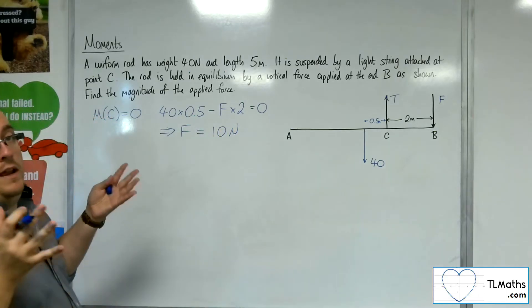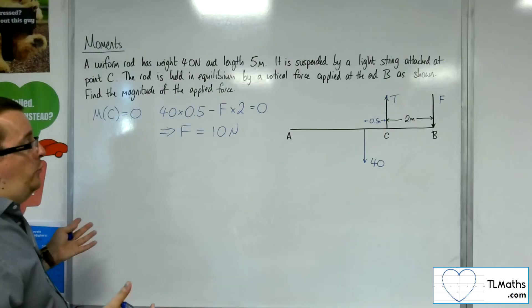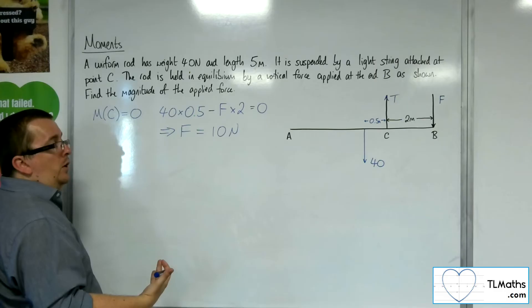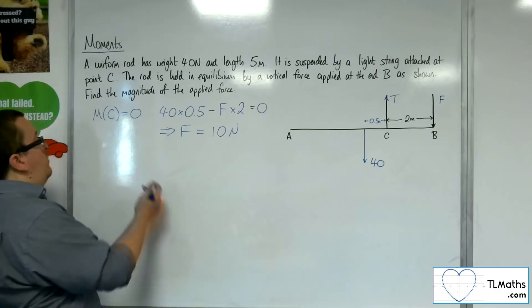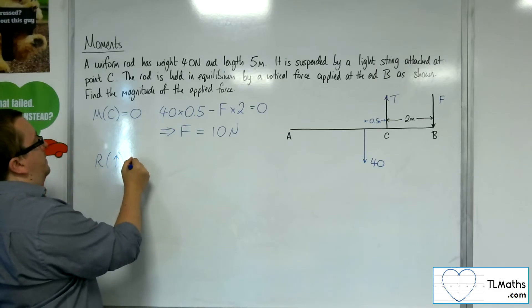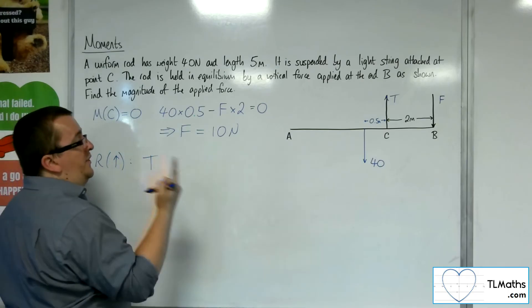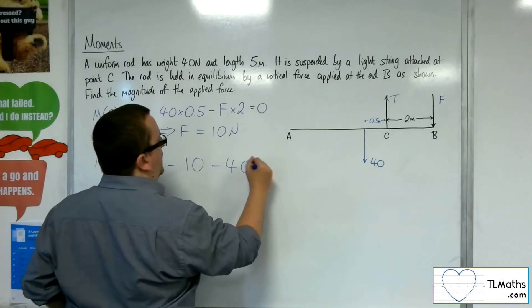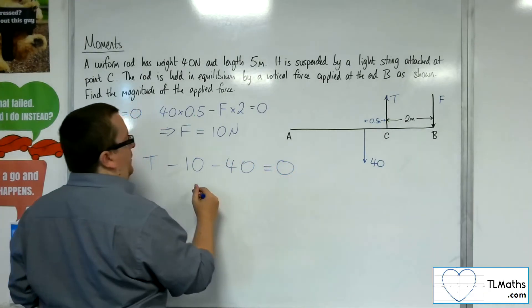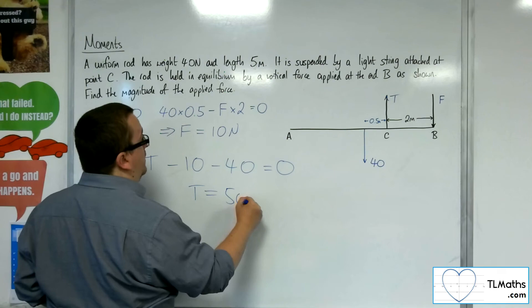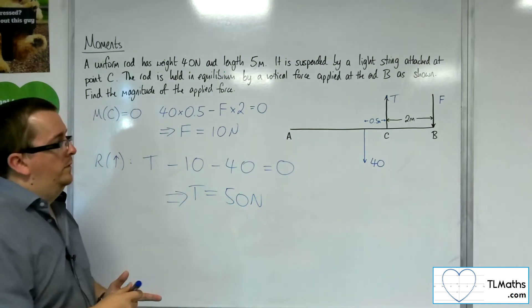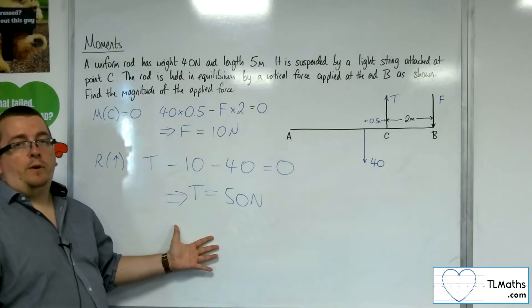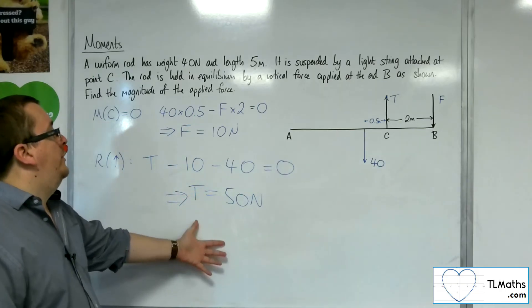Now, should we have needed to find T as well, we could then use the fact that the resultant force on the rigid body has to be 0. So if I resolve vertically, then I would have T working upwards, I've got F working downwards, I've got the weight working downwards, that's got to be equal to 0. And so the tension in the string must be 50 newtons. So we could easily finish off the question by finding the tension as well if we were required to do so.